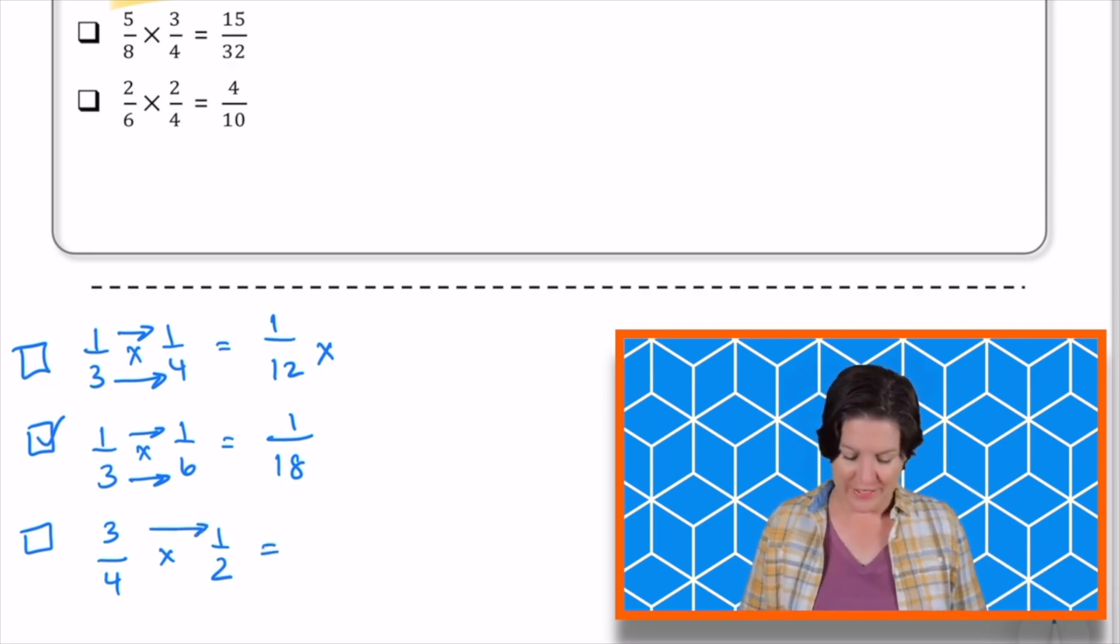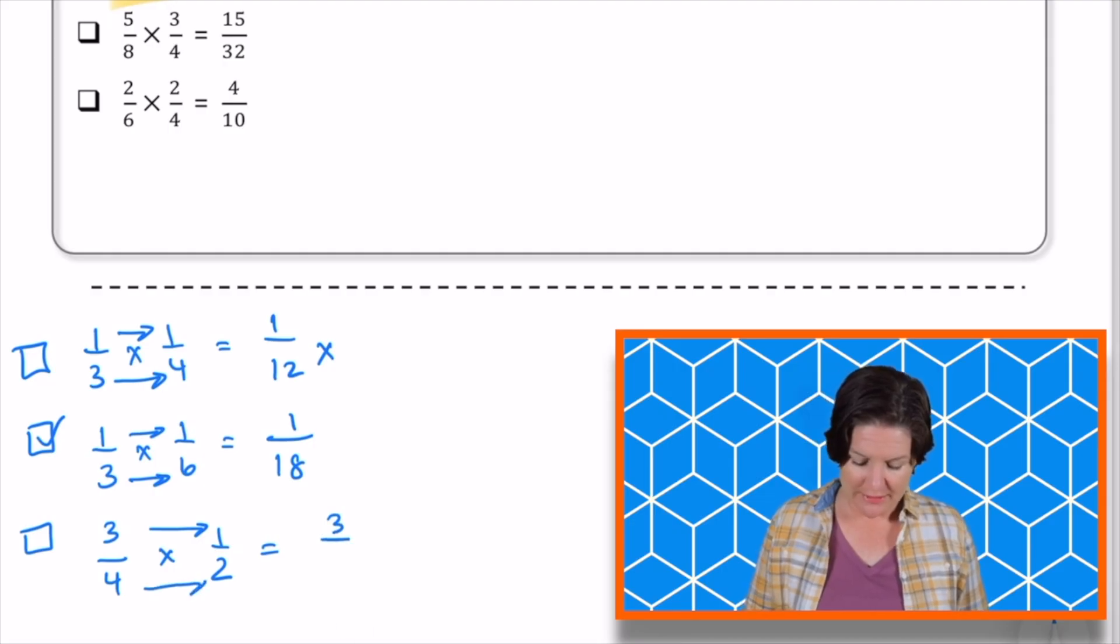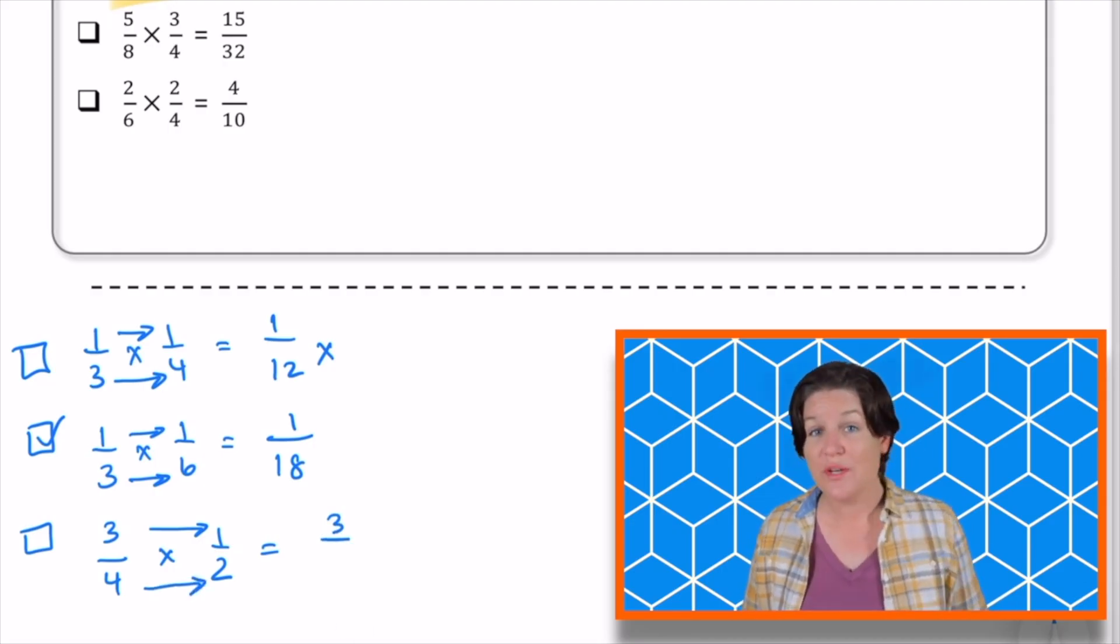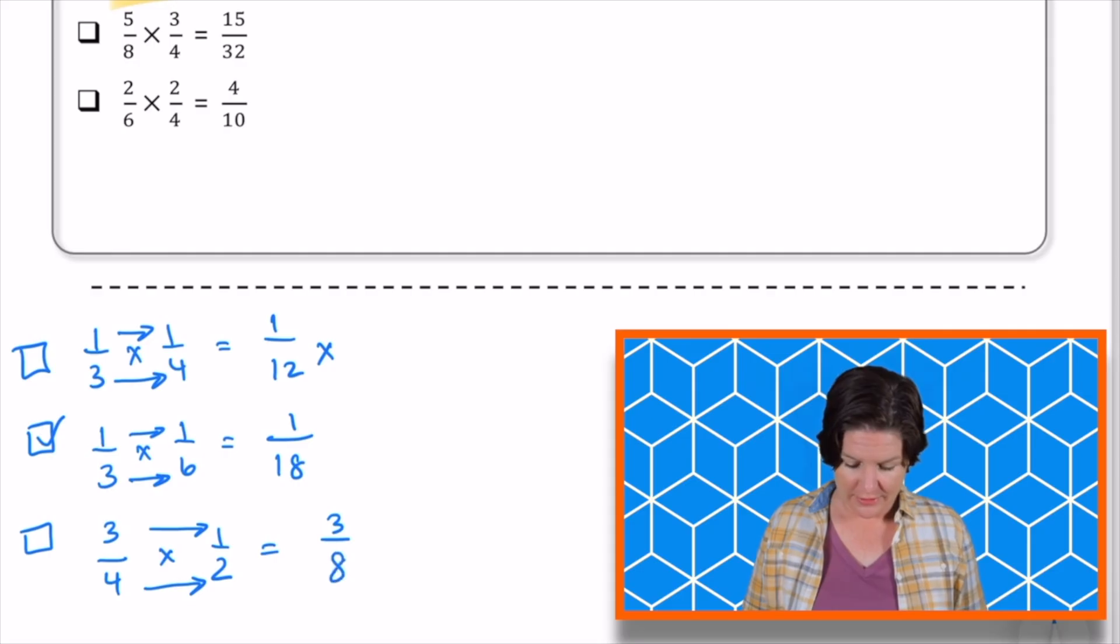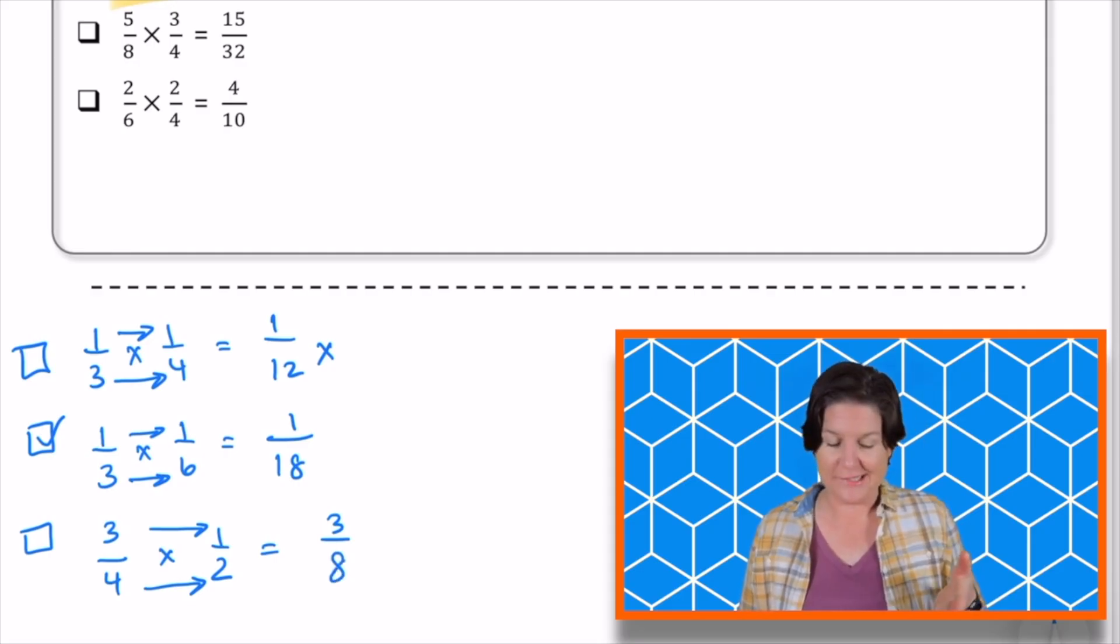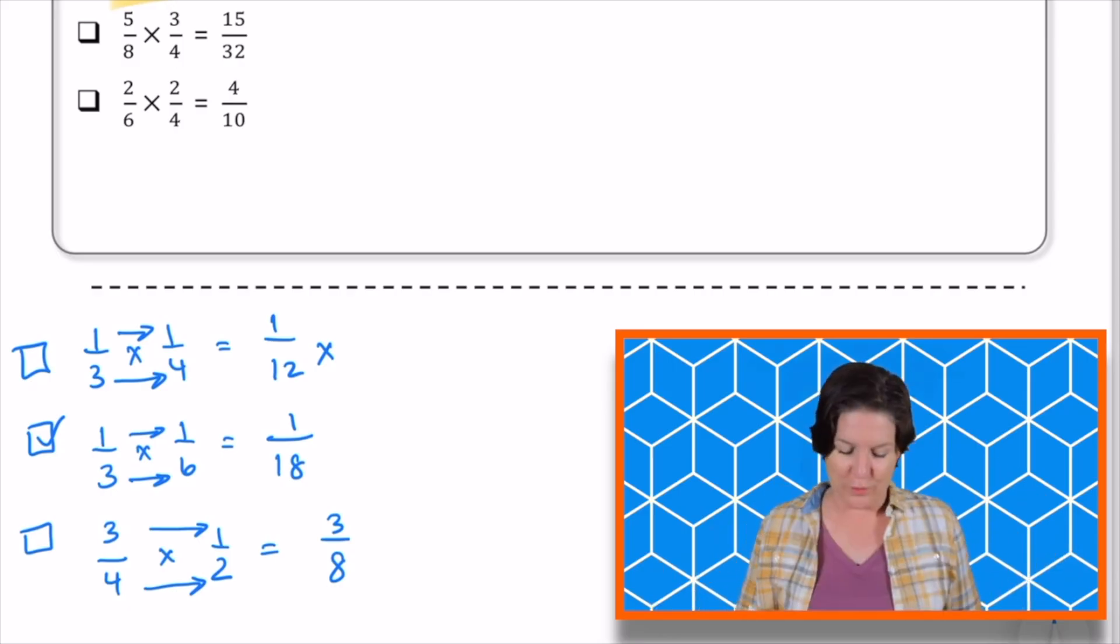Multiply the denominators, 4 times 2 equals 8. It would be 3/8, and it is not 4/6, so we can go ahead and eliminate that one.